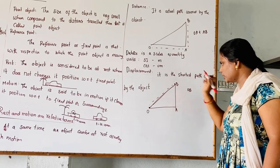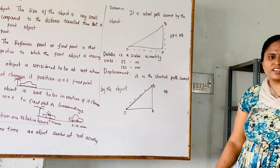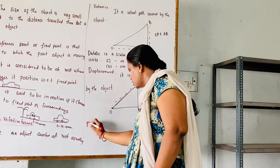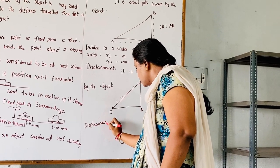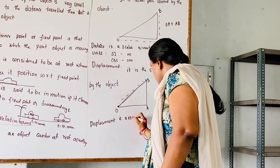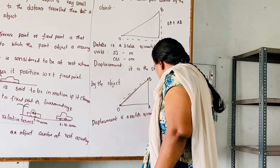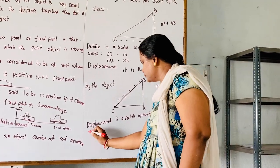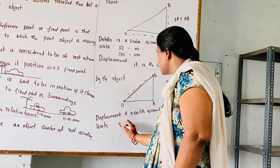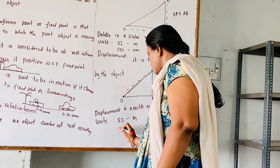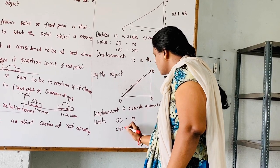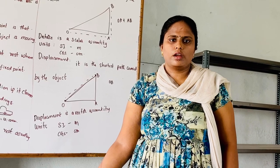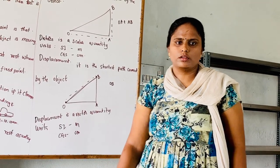Displacement is a vector quantity — it has both magnitude and direction. The units of displacement are the same as those of distance. This is all about the topic taught today. If you have any doubts, please put them in the comment section. Thank you.